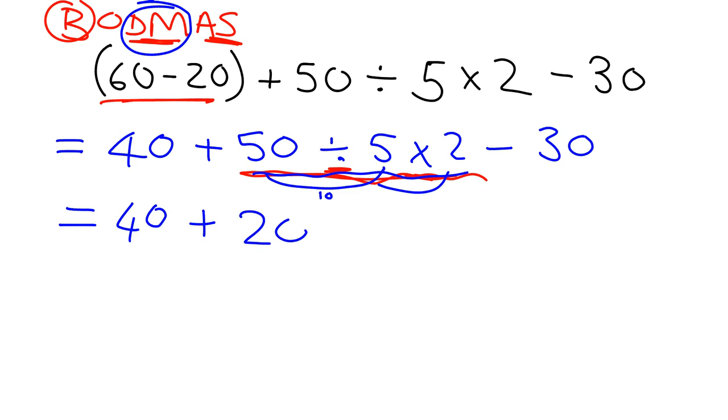Now what have I got? I've just got addition and subtraction, and again these are at the same level so I just work from left to right. So I go 40+20 gives me 60, and 60-30 gives me 30. And there's my answer.